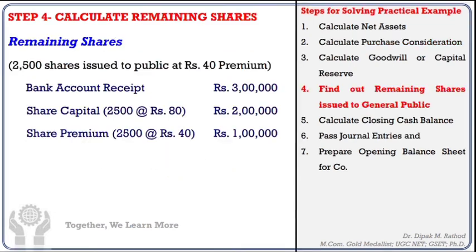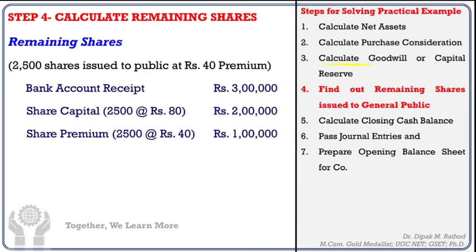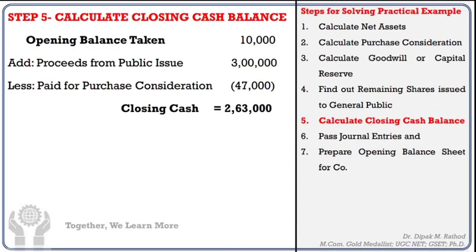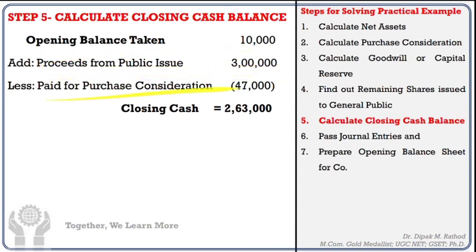For Purchase Consideration, we have 2,00,000 as equity share capital and 1,00,000 as share premium, so the remaining Rs. 47,000 is the amount to be paid in cash as purchase consideration. Total Net Asset equals PC, that is Rs. 3,47,000. For remaining shares issued to the public: 2500 shares at Rs. 40 premium, Rs. 80 paid up — Bank Account debited 3 lakh, to Equity Share Capital and Share Premium. Closing Cash Balance = Opening Balance (cash from public issue 3,00,000) less paid for PC 47,000 = Rs. 2,63,000, transferred to the initial balance sheet.